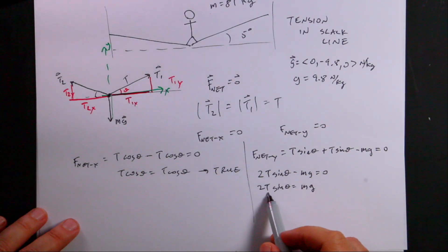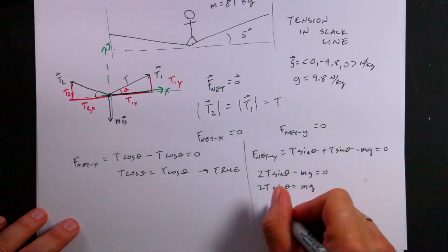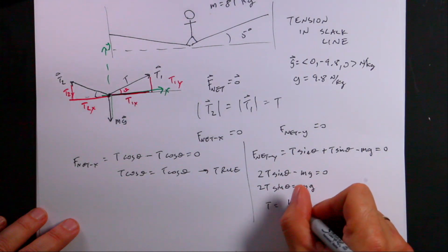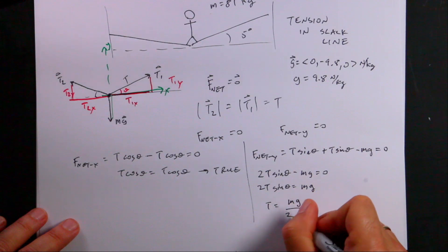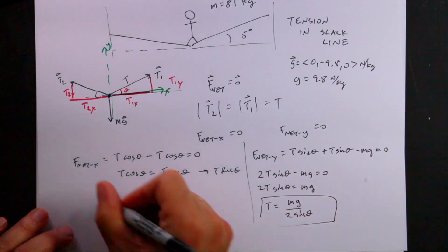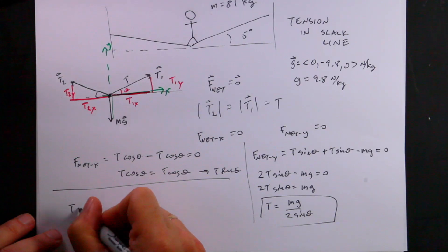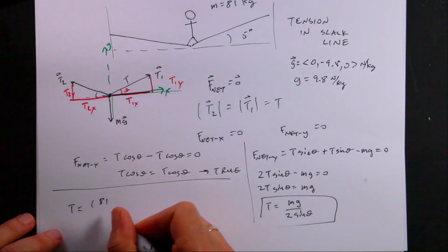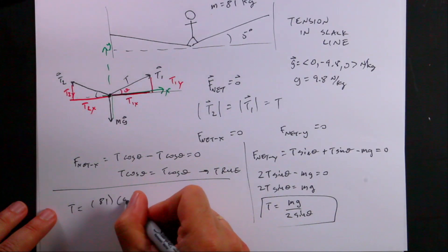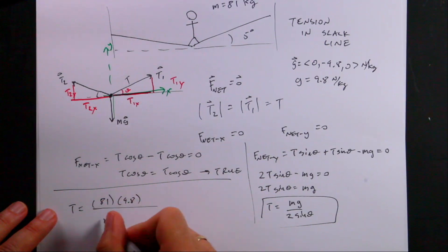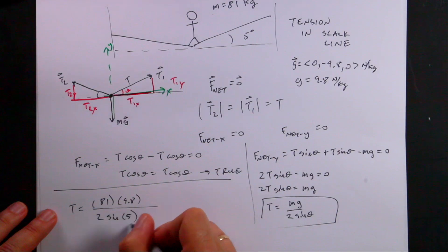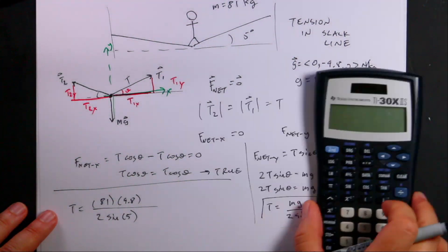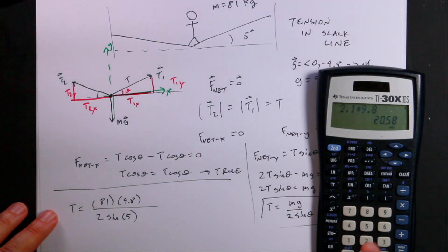And then I can divide both sides by 2 sine theta and I get T equals mg over 2 sine theta. Okay, so let's put in a value there. T equals 81 kilograms, 9.8 N per kilogram, divided by 2 sine of 5 degrees.